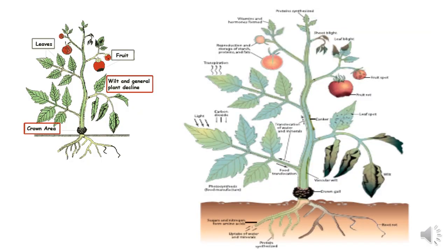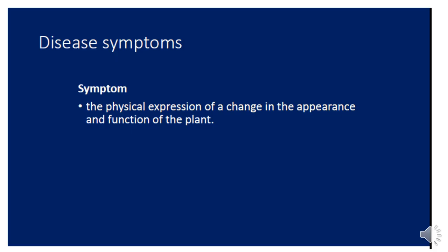The main functions of the plant are: number one, photosynthesis; number two, respiration; number three, transpiration; and number four, absorption of water and minerals from the soil. If one of these functions is disturbed or malfunctions, disease occurs. When disease happens, the plant will start to show symptoms.